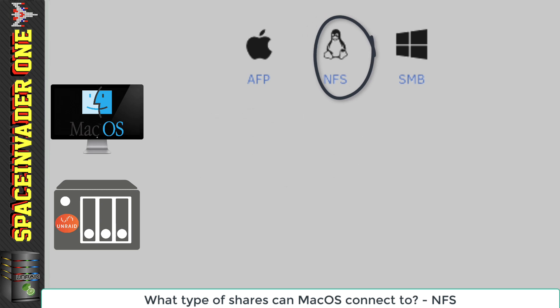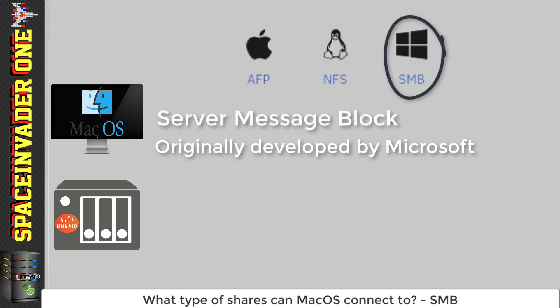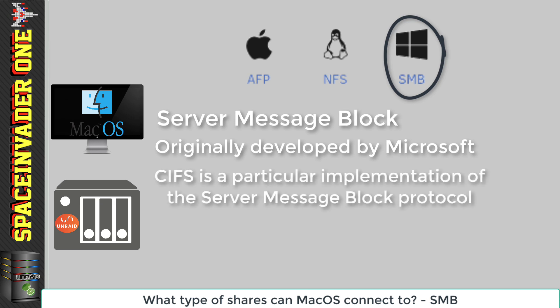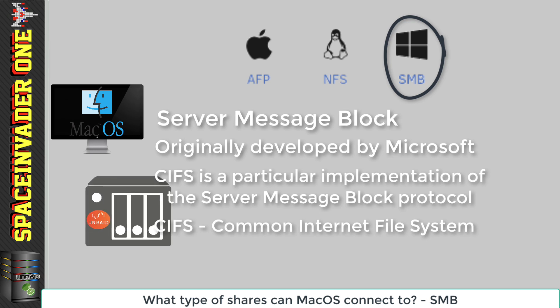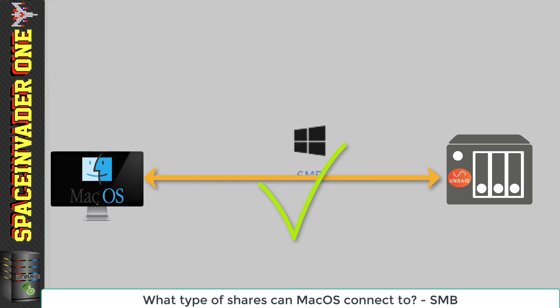Actually, the best type of shares to set up for an OS X client is an SMB share. The reason we see the Windows icon above the SMB protocol is because it was developed by Microsoft. SMB stands for Server Message Block. You may also have heard of CIFS — that's just another name for SMB, standing for Common Internet File System. So when using an OS X client, the preferred file sharing system nowadays is SMB.